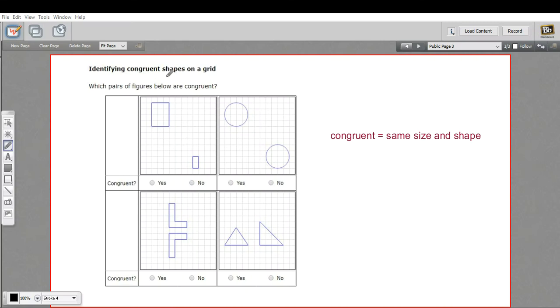In this problem, we're being asked to identify congruent shapes, to tell whether these two shapes you see in the box are congruent or not. Congruent is the fancy math word for the same size and shape, so two things have to be the same size and shape to be congruent.